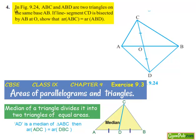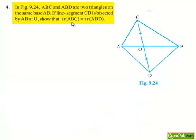Moving on to the fourth question. In figure 9.24, ABC and ABD are two triangles on the same base AB. If line segment CD is bisected by AB at O, show that area of triangle ABC is equal to area of triangle ABD.